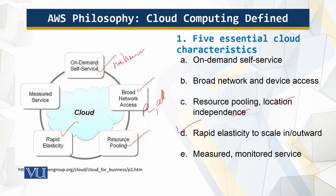Rapid elasticity: capabilities can be elastically provisioned and released, in some cases automatically, to scale rapidly outward and inward to commensurate with demand. To the consumer, the capabilities available for provisioning often appear to be unlimited, and can be appropriated in any quantity at any time.